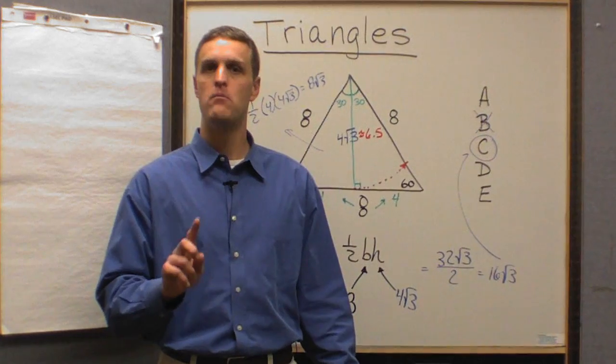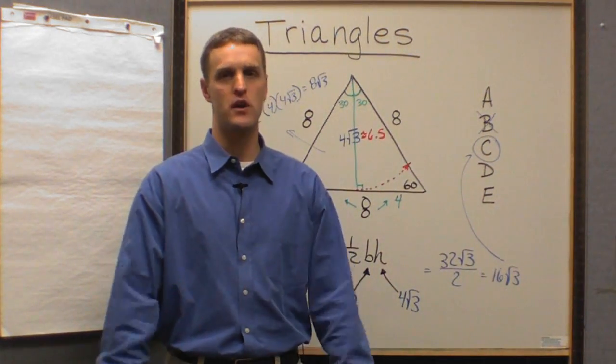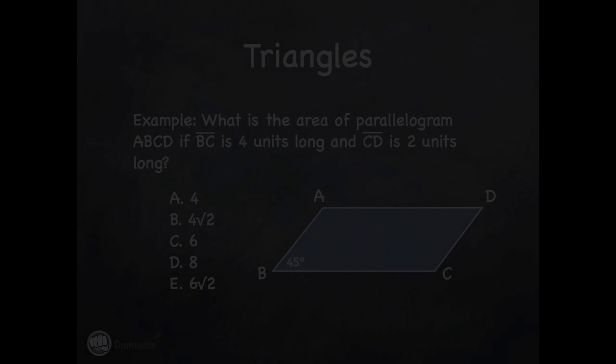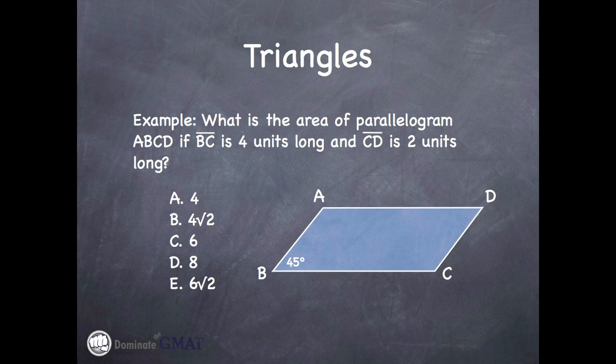And with that, let's turn our attention and do one more example that I think will bring all of what you've learned about triangles together. So take a look at this example. This example reads, what is the area of parallelogram ABCD if the length of side BC is 4 units long and CD is 2 units long?